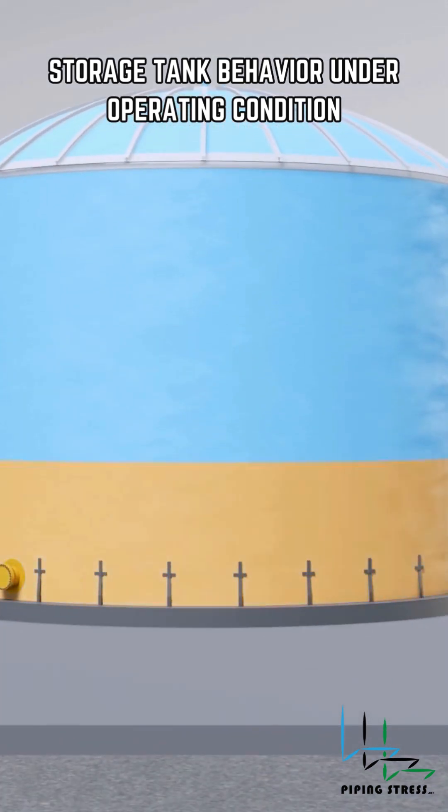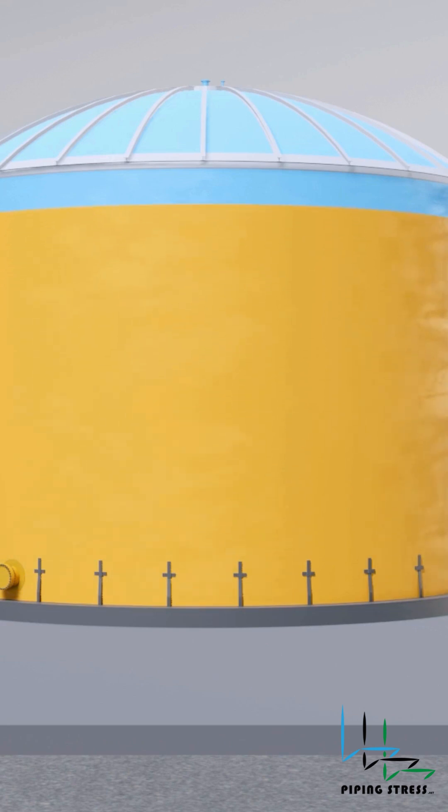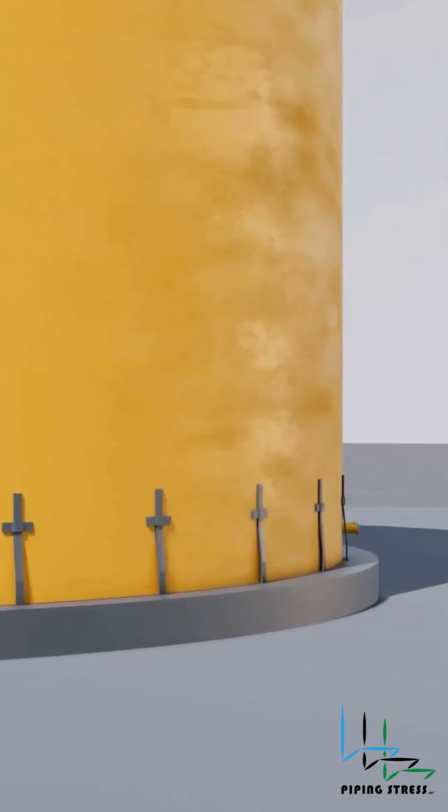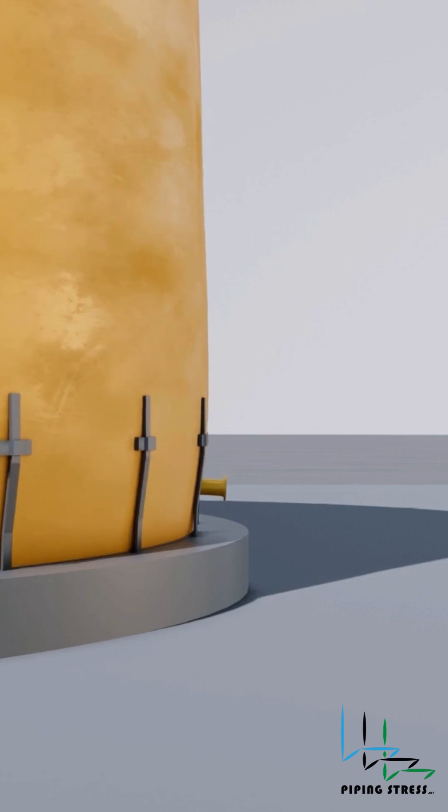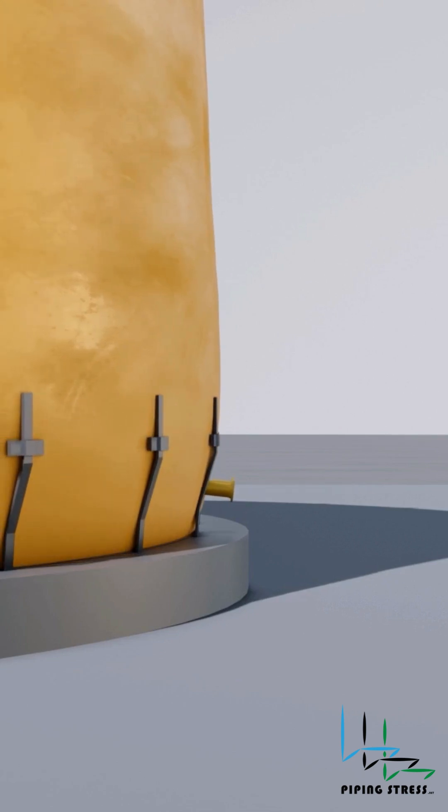After filling the storage tanks with a process fluid, the bottom shell tends to bend outwards due to the internal hydrostatic pressure. This bending affects the low-type nozzle's direction, and the nozzle may turn downward or upward.